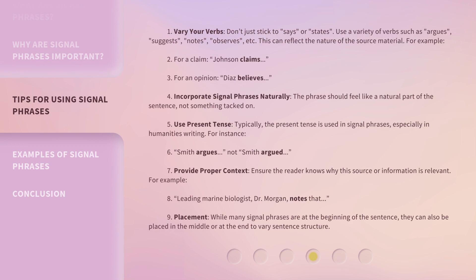Here are some tips for using signal phrases effectively. First, vary your verbs. Don't just stick to 'says' or 'states.' Use a variety of verbs such as 'argues,' 'suggests,' 'notes,' 'observes,' etc. This can reflect the nature of the source material. For example, for a claim use 'Johnson claims,' and for an opinion use 'Diaz believes.' Second, incorporate signal phrases naturally — the phrase should feel like a natural part of the sentence, not something tacked on.